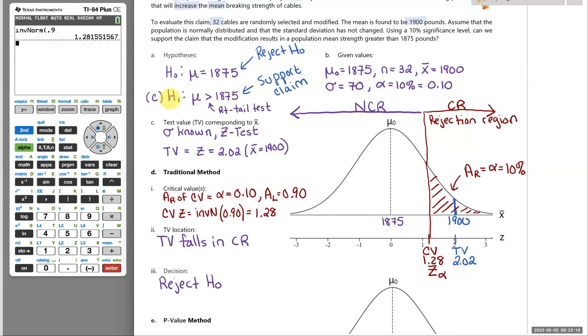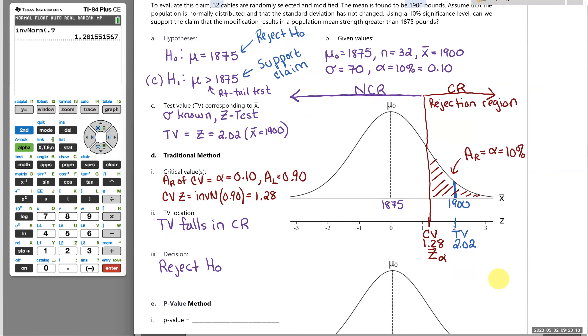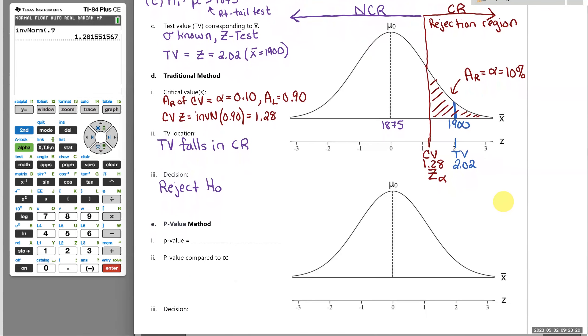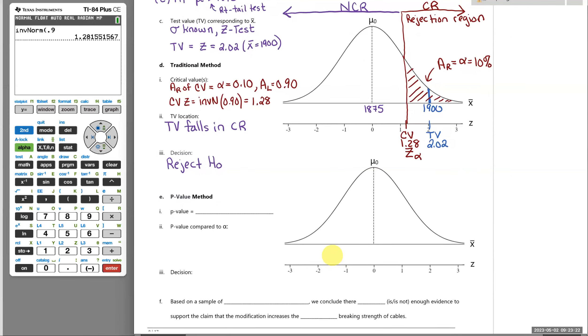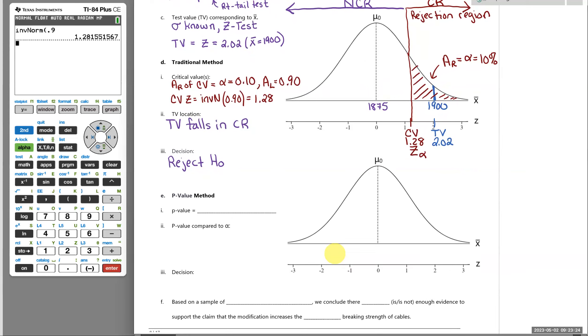But there's a second way to say that 1900 is very far to the right. And that would be called the p-value method. So we always have an option of which method to use. We don't generally do both, unless you are taking statistics and we're learning both methods. But let's check out that same problem. And what would the p-value method look like?